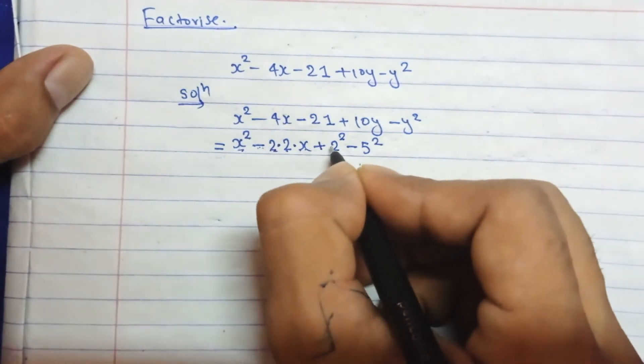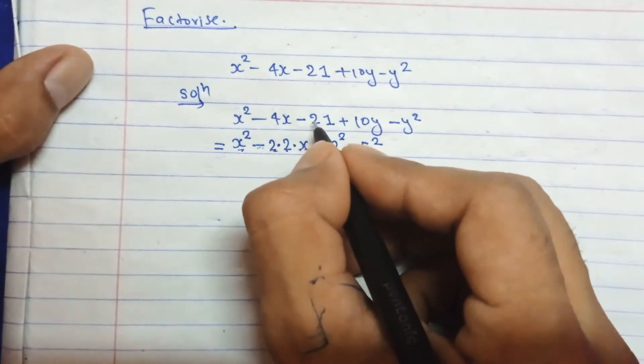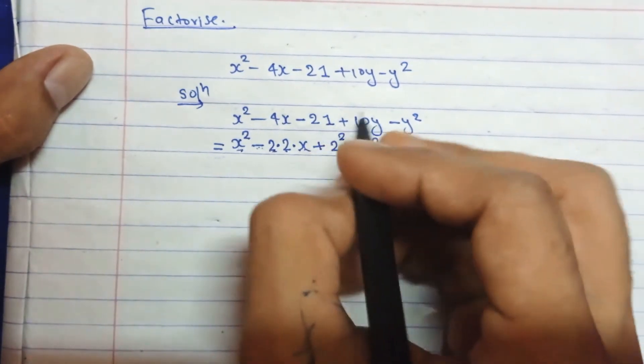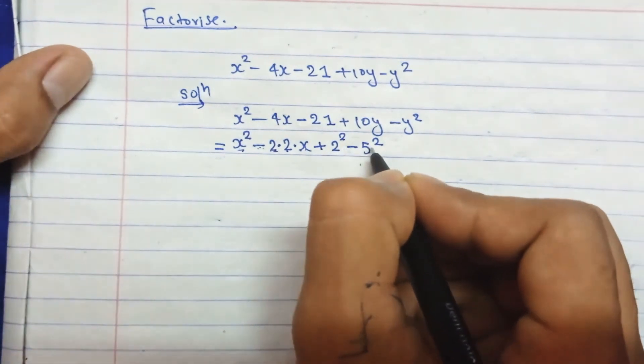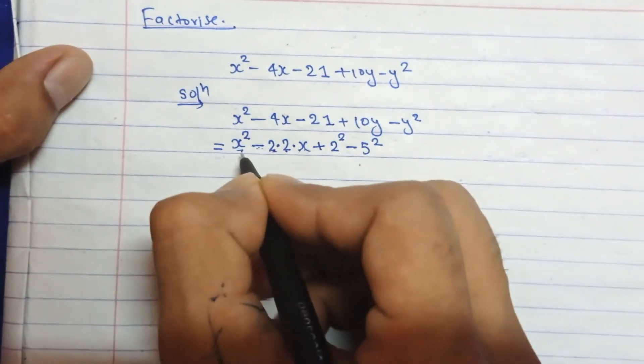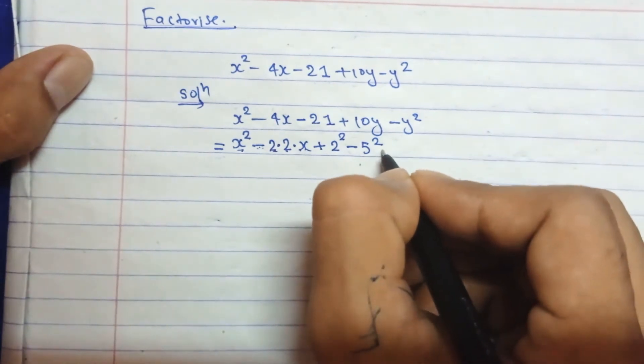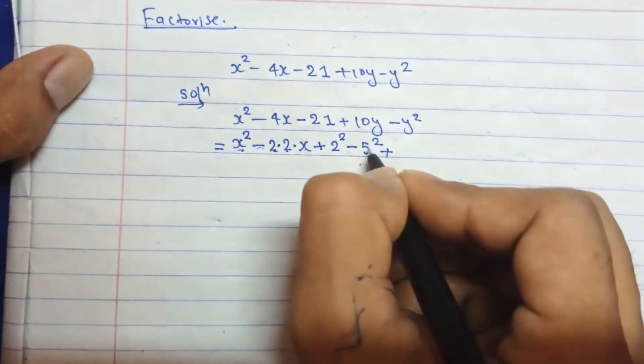It means that -25 and +4 is -21. Simply we make this -21 into +2² and -5² so that we can use the formula here.